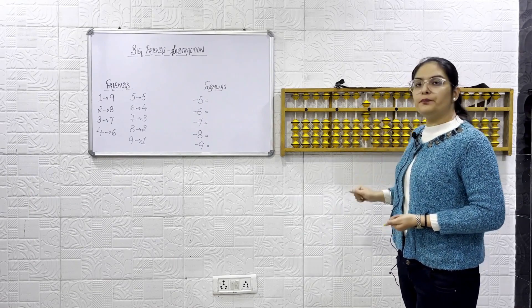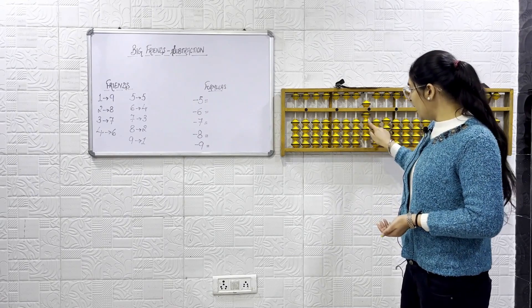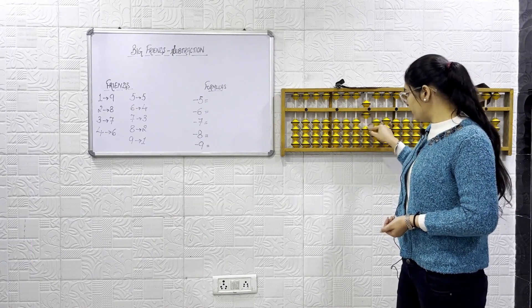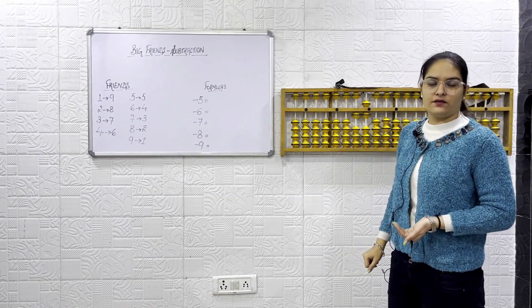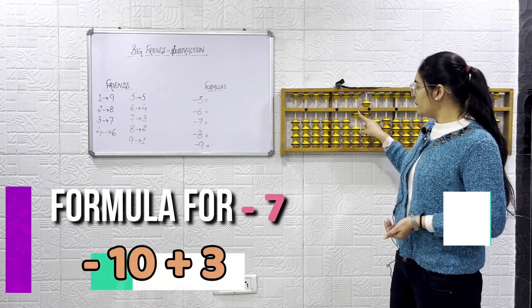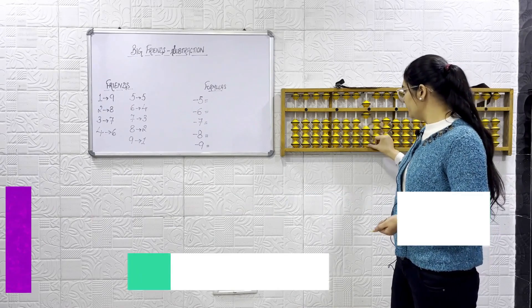In this we have to do plus 7. Formula for plus 7 will be minus 3 plus 10. Now, in this we have to do minus 7. So, formula for minus 7 will be the opposite one. Minus 10 plus 3.